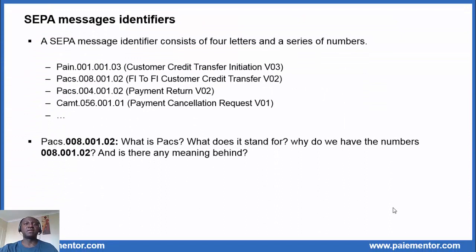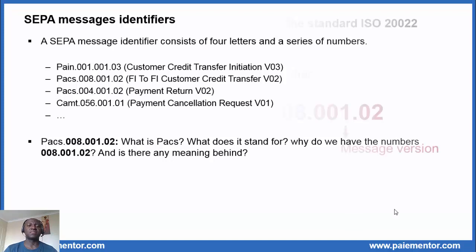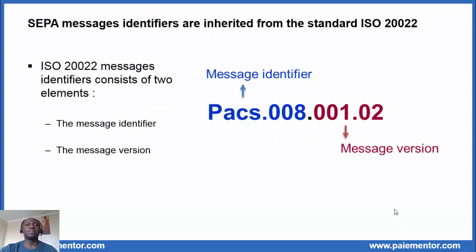A SEPA message identifier consists of four letters and a series of numbers. PAIN 1.1.3, PACS 8.1.2, PACS 4.1.2, and so on are examples of message identifiers used in the SEPA Credit Transfer Scheme. You may wonder, when you see PACS 8.1.2, why do we have the numbers 8.1.2? What does PACS mean? Is there a meaning behind all that? Well, the answer is yes, and we find explanations in the standard ISO 20022. In fact, SEPA message identifiers are inherited from the standard ISO 20022.